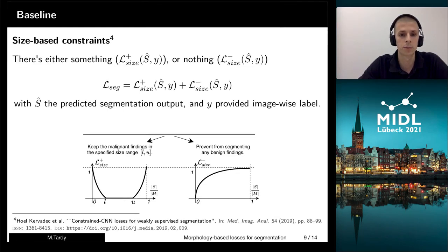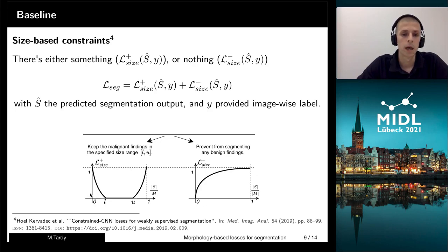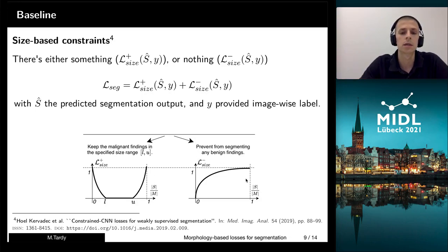The first constraint is size-based, and this is inspired by the work of Kerbadek, who proposed to set the penalty for segmentations which are either too big or too small. And we added on top of that a penalty for all the benign images, meaning if the image is benign, nothing needs to be segmented, so the penalty should be set for all sizes of the segmented prediction.